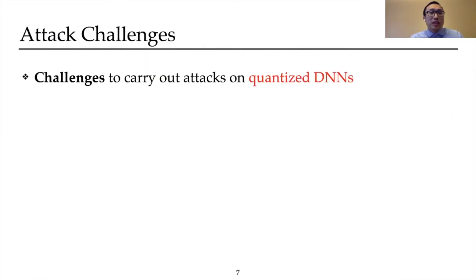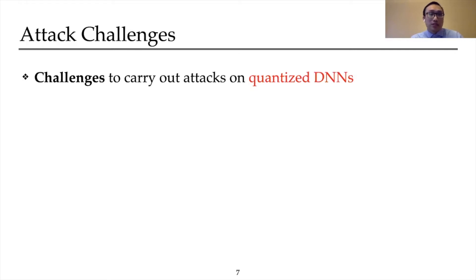Unfortunately, it is challenging to realize an end-to-end attack for such an objective. We summarize two major challenges. The first is how to identify the most vulnerable bits to flip — this is an algorithm-level challenge. And secondly, given a bit-flip plan, how to successfully flip those bits in a real system — this is a system-level challenge.